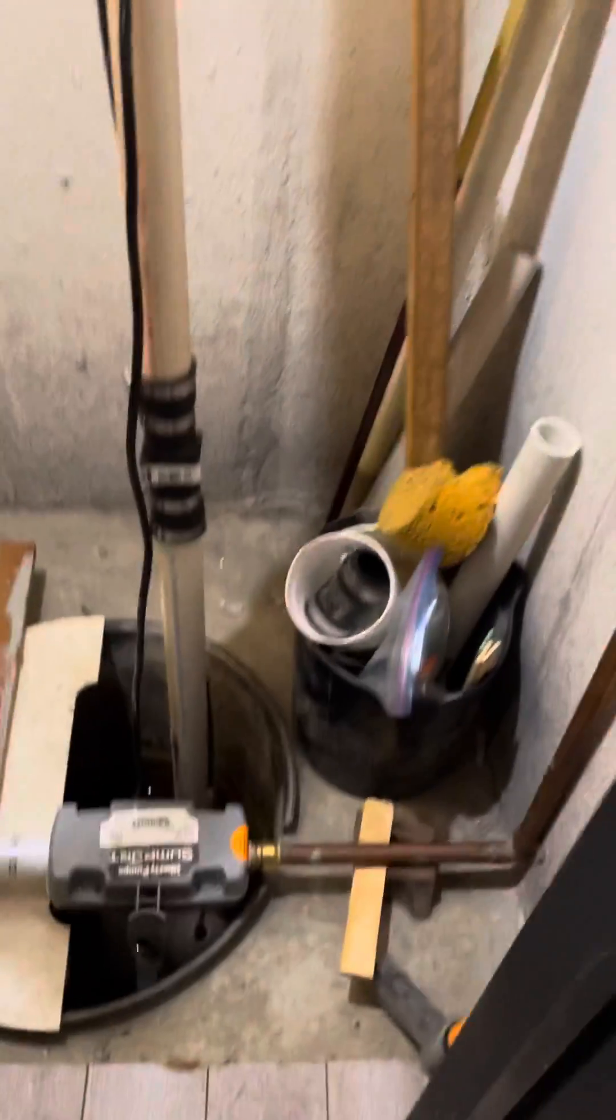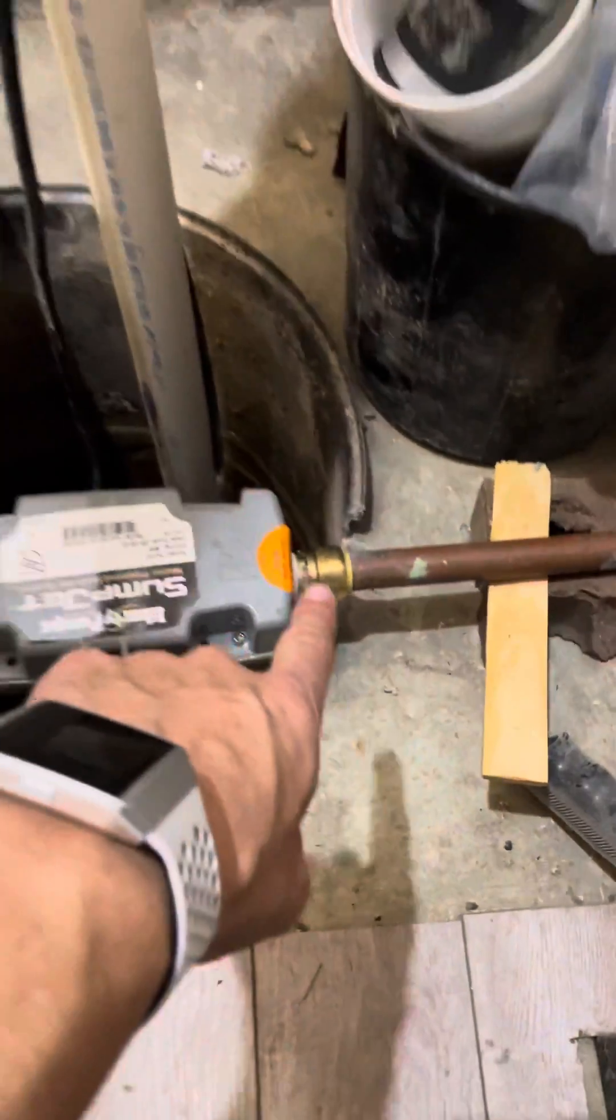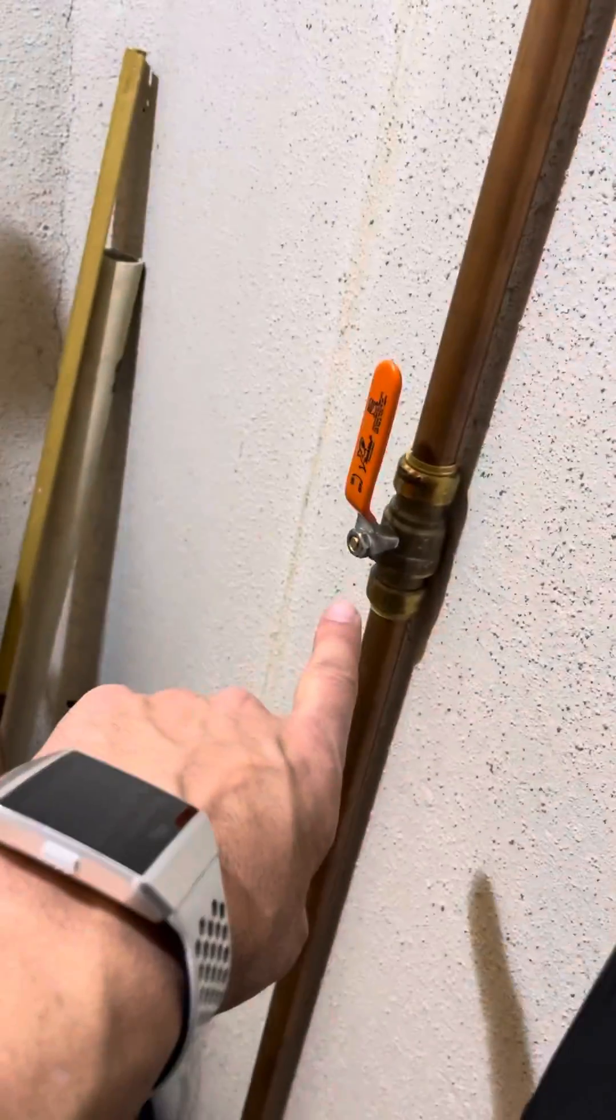It's fairly simple. It's got a shark bite end on the end. You've got to cut the pipe. I have an on-off valve right here.